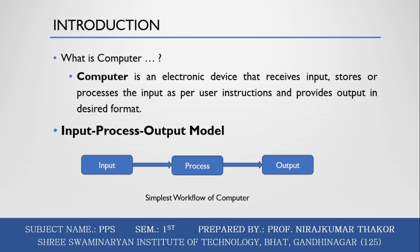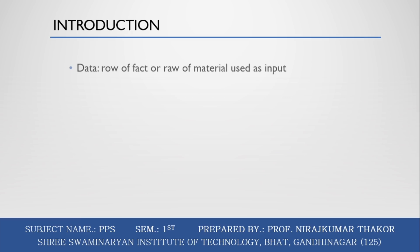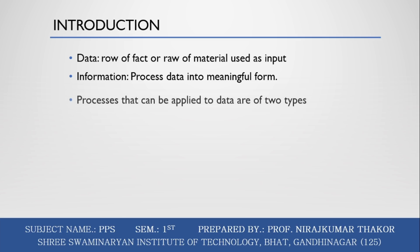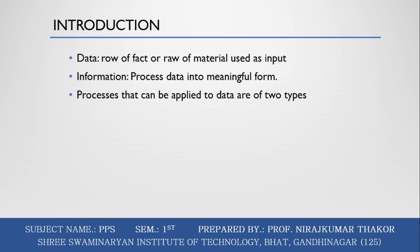This is the simple workflow of a computer. Data means raw facts or raw material used as input. Information is processed data converted into a meaningful form using arithmetic or logical operations. The processes that can be applied to data are of two types: arithmetic operations and logical operations.